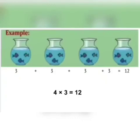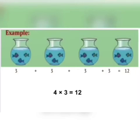Now let us take one more example. We have 4 groups, and each group has 3 fishes. So if we want to find the total number of fish, we will add 3 four times. Since we have learned that if we want to add the same number repeatedly, we do multiplication. There are 4 groups, so we write 4 and multiply by 3. So 4 into 3 is 12.